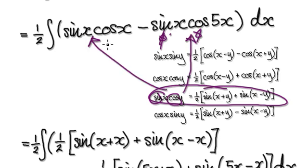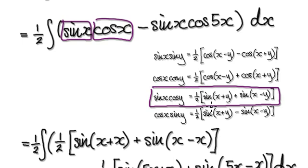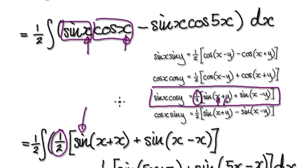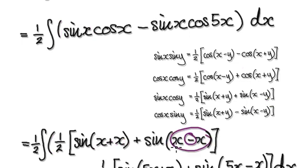To break up sine times cosine, you follow the formula: it's a half times sine of one angle plus the other angle, plus sine of one angle minus the other angle. This second term — sine of one angle minus the other angle — will later become sine of zero, which equals zero. Do the same for this other term, and you get this result.